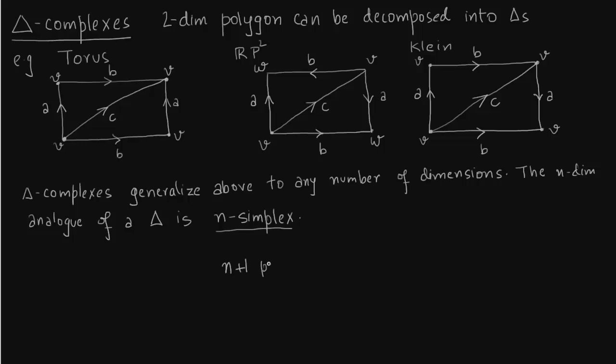An n simplex is nothing but a convex set in a Euclidean space R^n and it contains n plus 1 points, from V0, V1 to Vn. These are the n plus 1 points. And these points do not lie in a hyperplane of dimension less than n. Basically we do not want this to become a flat surface. Or we can say the following difference vectors are linearly independent. This is the equivalent condition.